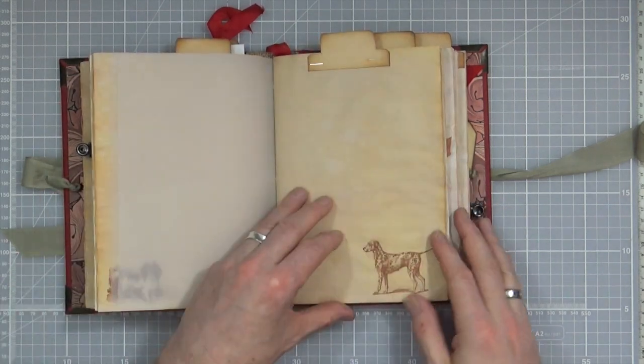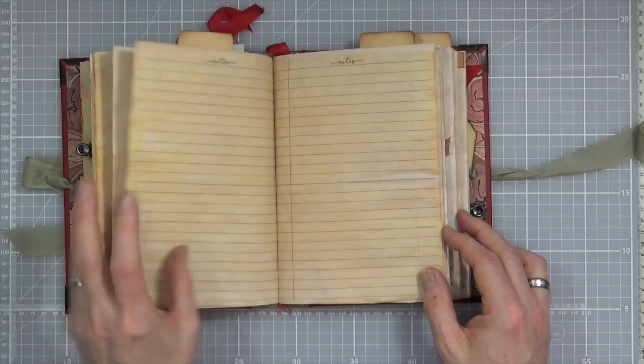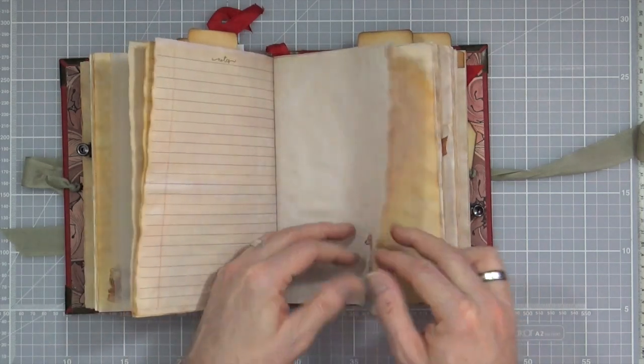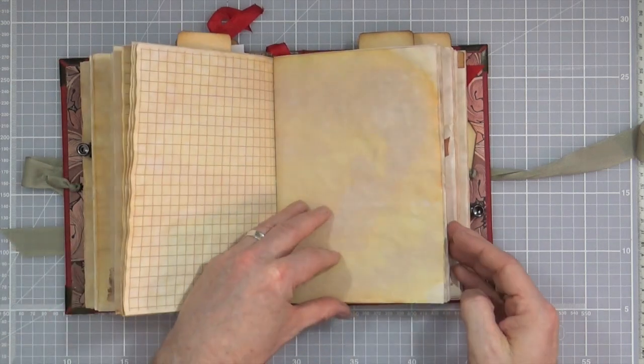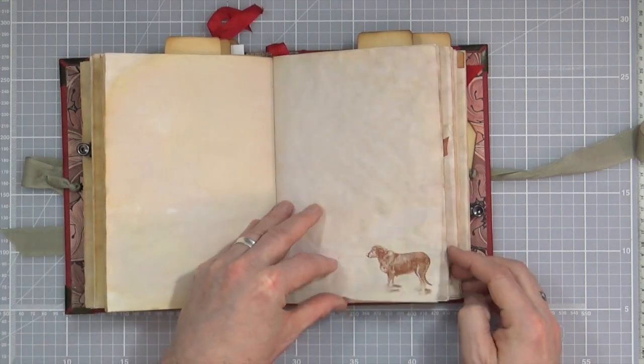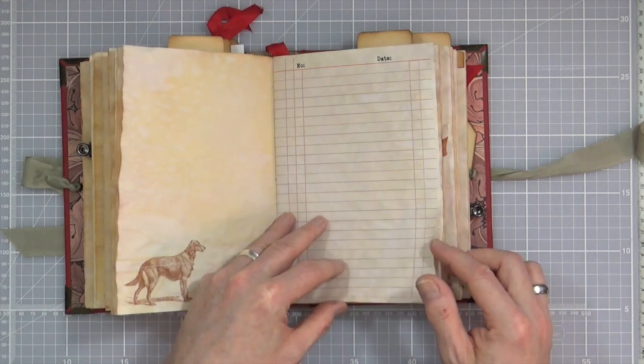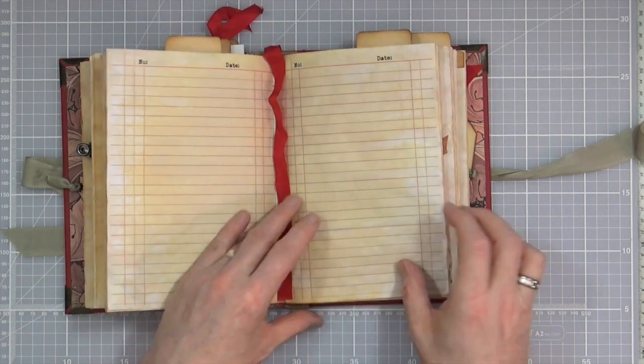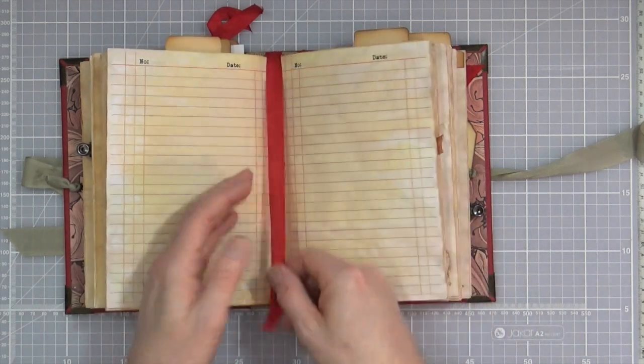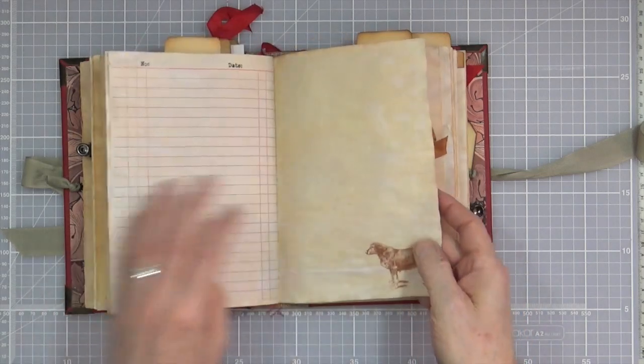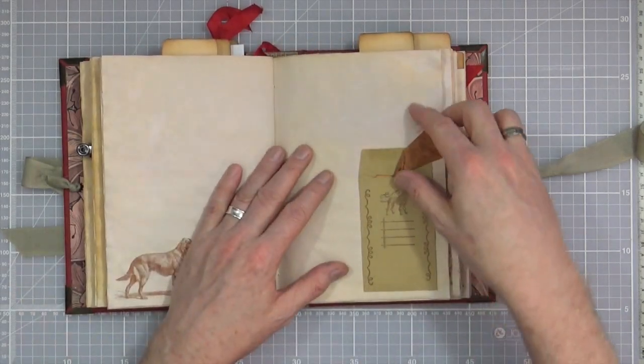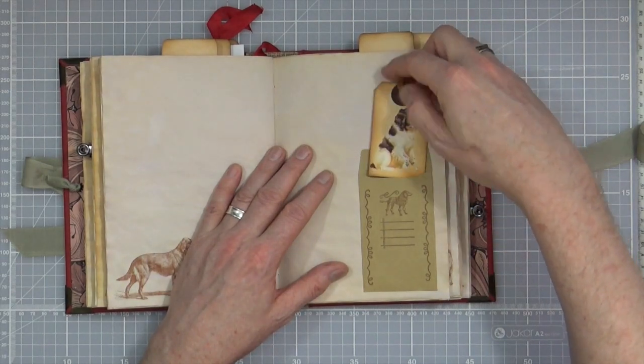Nice vellum. Again plenty of writing space, plenty of different doggies featured throughout the journal. All sorts of different ones. There's that center so you've got your bookmark page, page marker, nice kind of wrinkly paper, another little doggy journal.